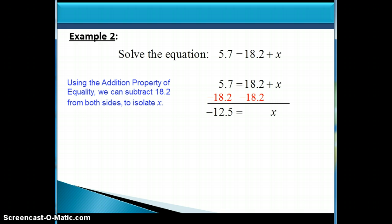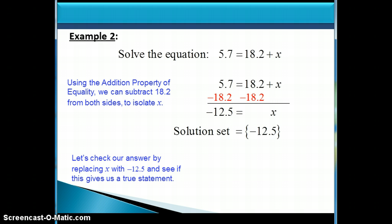So x is equal to negative 12.5. That is our solution. And we can put that inside curly brackets, and that's called our solution set. So let's check our answer by replacing x with negative 12.5 and see if this gives us a true statement.